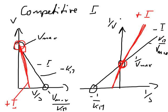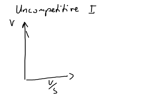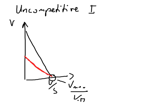Now let's look at an uncompetitive inhibitor — first an Eadie-Hofstee plot with V over S. Without inhibitor we get a straight line; this point gives us Vmax over Km. With the inhibitor, we know an uncompetitive inhibitor does not change Vmax over Km, so a typical plot with inhibitor shows that Vmax over Km is not changed at all.